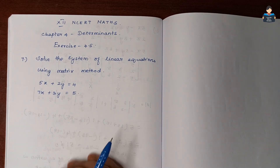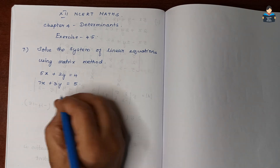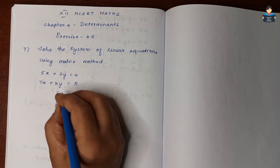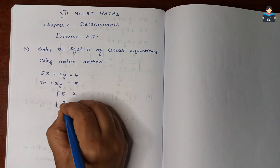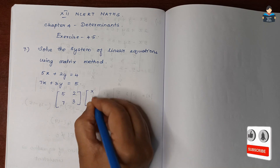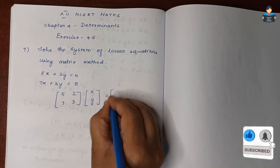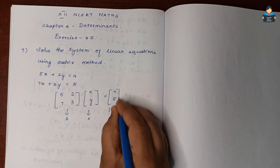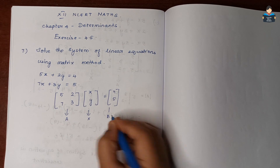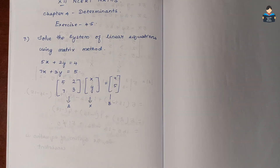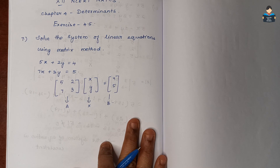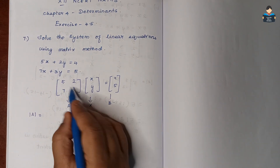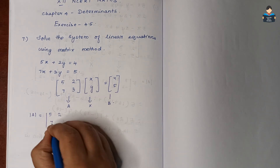So first, we set up matrices A, X, and B. Matrix A is [5, 2; 7, 3], matrix X is [x; y], and matrix B is [4; 5].